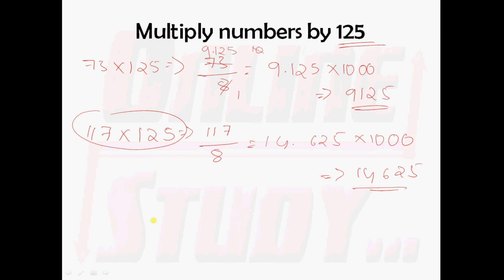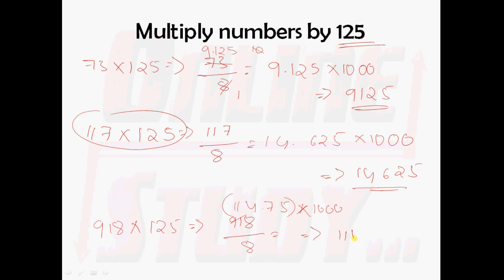We shall take one more example: 918 into 125. 918 should be divided by 8. You will get 114.75. And this 114.75 should be multiplied with 1000. So finally you will get 114750. That is, 918 into 125 is 114750.